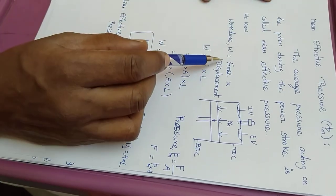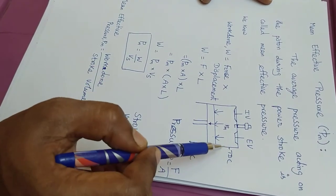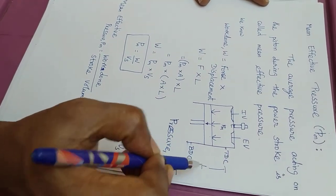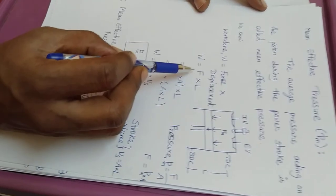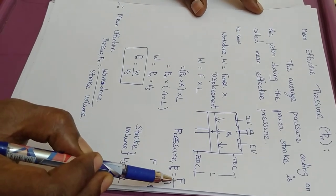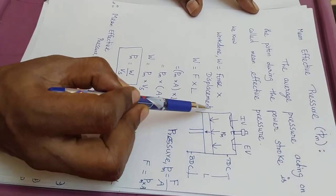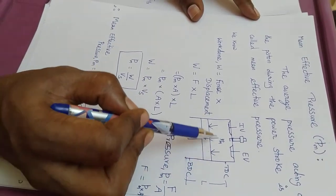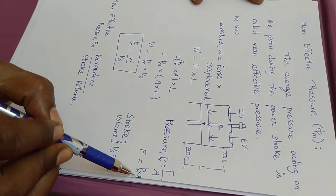Work done is force multiplied by displacement. Here the force is the gas force acting on the piston, and displacement is the movement of the piston between TDC and BDC, which is the stroke length L. Mean effective pressure equals force exerted by the gas divided by the area of cross section, where the area is pi·D² by 4 and D is the bore of the cylinder. Therefore, the gas force equals mean effective pressure multiplied by the area of cross section of the cylinder.